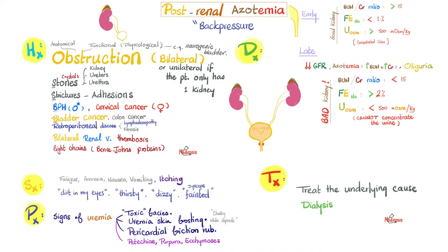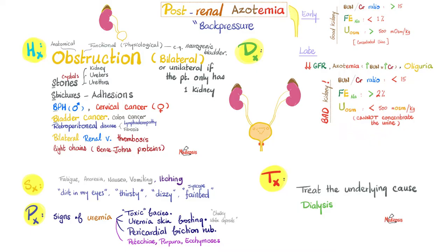Early on in post-renal azotemia, the kidney is still good: BUN-to-creatinine ratio is normal above 15, fractional excretion of sodium is less than 1%, and urine osmolality is above 500. But later, when back pressure destroys the kidney, it behaves like intrarenal azotemia: BUN-to-creatinine ratio is poor, FENa exceeds 2%, and urine osmolality is low because the kidney can no longer concentrate the urine.